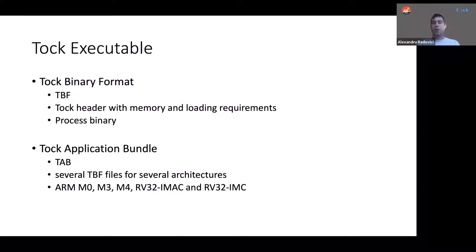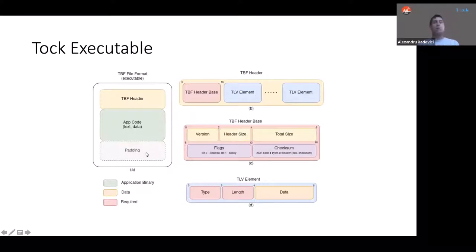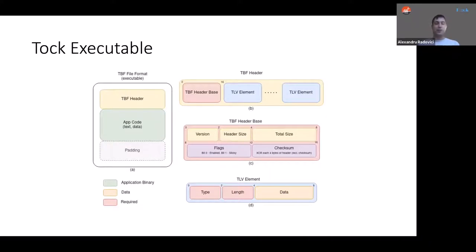If we take a closer look at the TBF file, it is composed of three components: the TBF header, the actual application code (text and data), and some padding necessary to obey the memory protection unit rules. This padding is not a simple 4-byte alignment but rather a padding to the power of 2, usually for Cortex-M. For RISC-V this is not so restrictive. This padding makes it possible to separate applications and run them in separate memory protection zones.